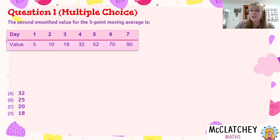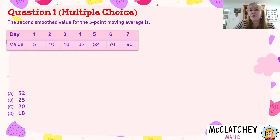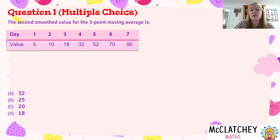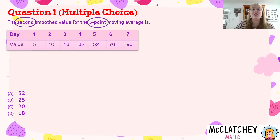This is our multiple choice question. The second smooth value for the three point moving average is — and then you're given a table. The very first thing you need to do is read the question carefully, because it's very tempting when looking at multiple choice questions to race through, particularly if you're feeling a little bit anxious. This was the very first question on the paper, so it could be very easy to make the mistake of just calculating the three point moving average for the first three numbers and jumping straight into that as your answer.